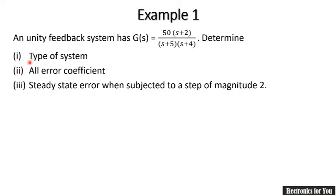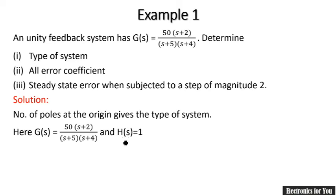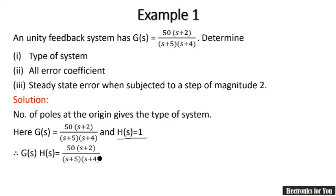The first one is the type of a system. The type of system is the number of poles at origin for an open-loop transfer function. The open-loop transfer function is G(s) × H(s). Since it is a unity feedback system, H(s) = 1, and therefore G(s) × H(s) = 50(s + 2) / [(s + 5)(s + 4)].